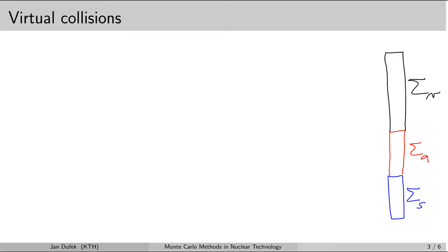Let's assume that the absorption cross-section creates 25% of the total macroscopic cross-section, and the scattering cross-section also creates 25%. So every second collision on average should be a virtual collision, and the remaining collisions should be either absorption reactions or scattering collisions, each with a 25% chance.